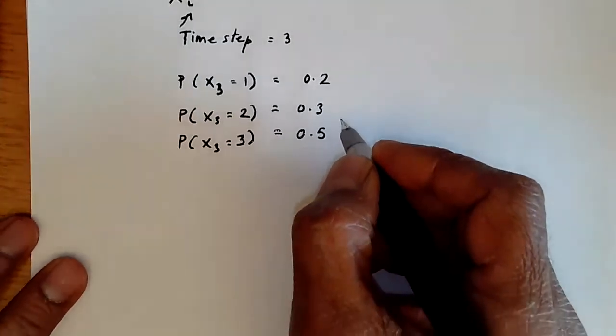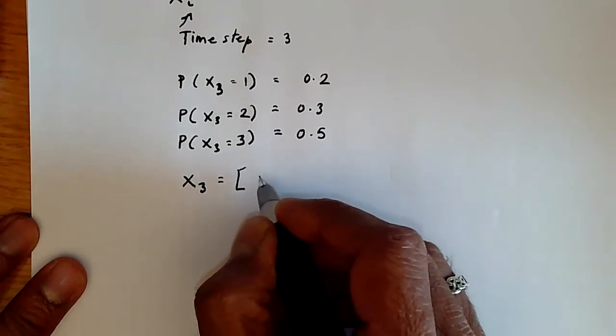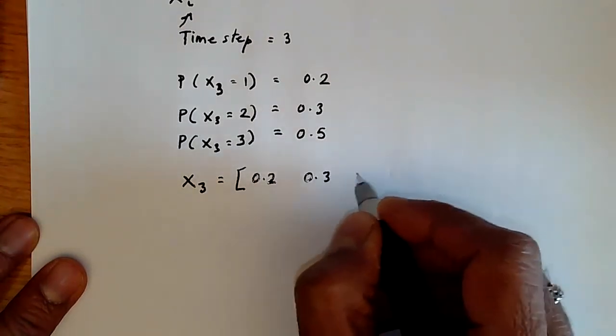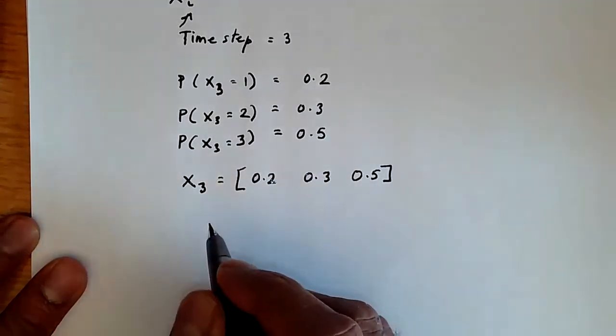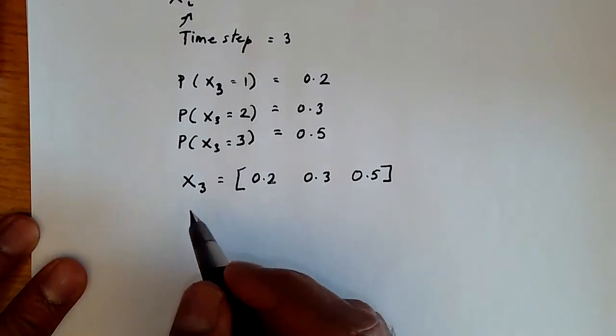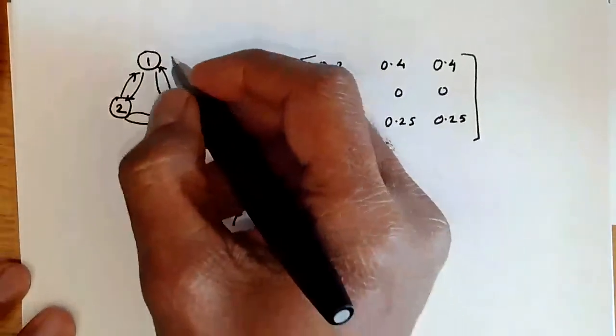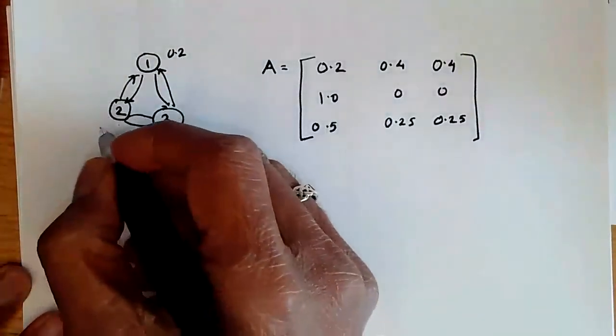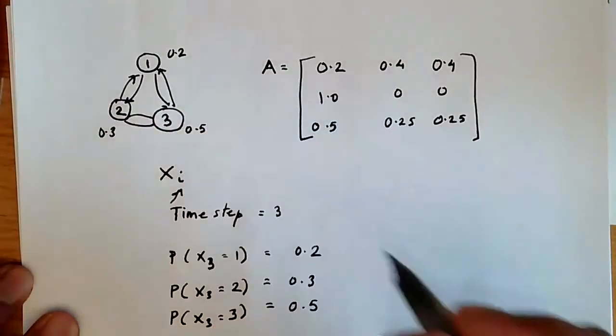And one way to represent this would be like this. You can say X3 equals this row vector: 0.2, 0.3, 0.5. And so we interpret this as being that at time step 3, we have probability 0.2 of being in state 1, 0.3 of being in state 2, and 0.5 of being in state 3.